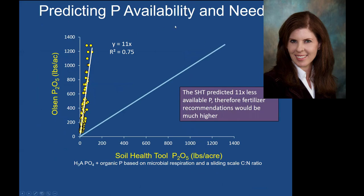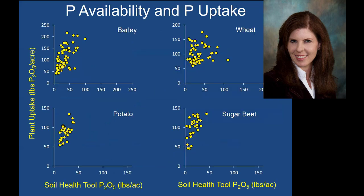We also looked at using the tool to predict phosphorus availability. This uses the weak acid and organic microbial-based P on the X-axis compared to our typical Olsen P on the Y-axis. Although there was a really good relationship between the two tests, the soil health tool predicted 11 times less available P than we do with just our traditional soil testing. Therefore, if we had gone with these numbers, we would have been adding a lot more phosphorus fertilizer than we would using our traditional soil test methods. Even in control plots where the soil health tool predicted very low amounts of available phosphorus, the plants were taking up quite a bit.